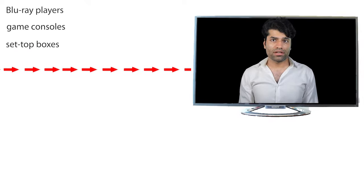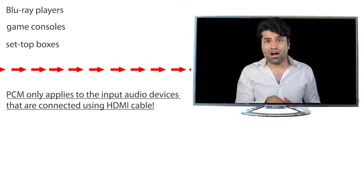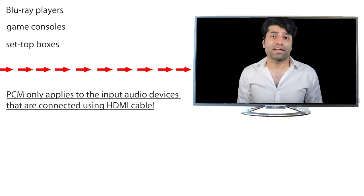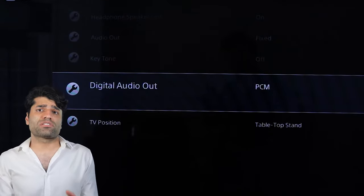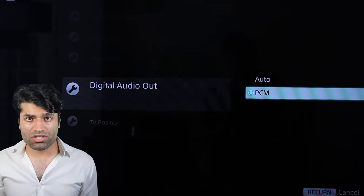First, let's look at input audio setting options for the TV. PCM only applies to input audio devices connected using an HDMI cable. If your input device has already processed the sound and you want to hear it directly through your TV speakers only, then select the PCM option.